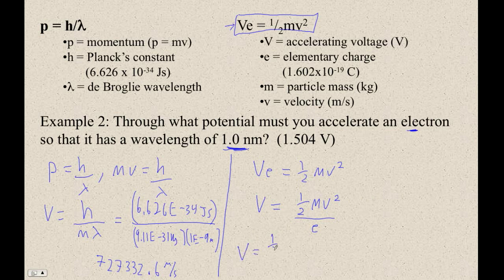So the accelerating voltage is one half times 9.11 E minus 31 times that velocity, 727332.6 squared, divided by 1.602 E minus 19. So 0.5 times 9.11 E minus 31 times this thing squared. So I'm going to go second answer squared, because that was the last answer I got. And then I divide by 1.602 E minus 19. And I get, drum roll please, 1.504 volts.